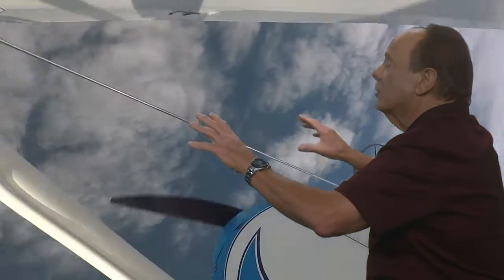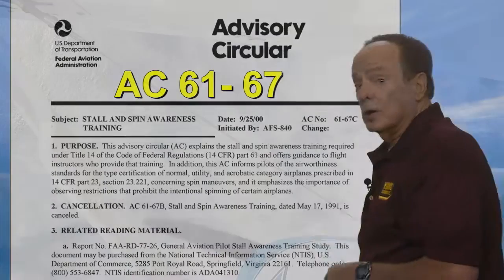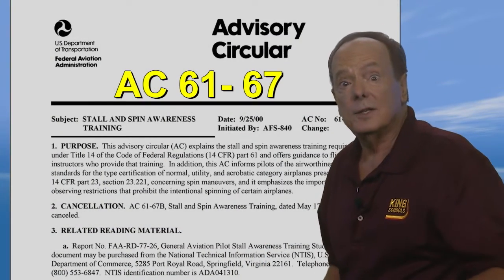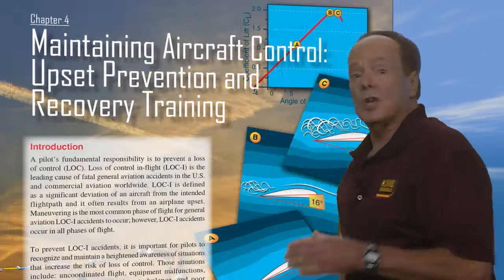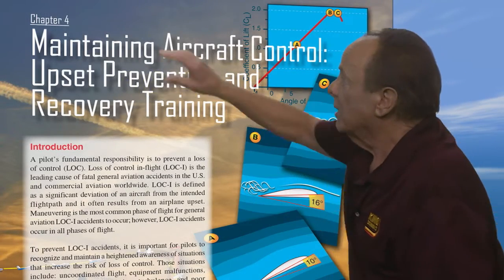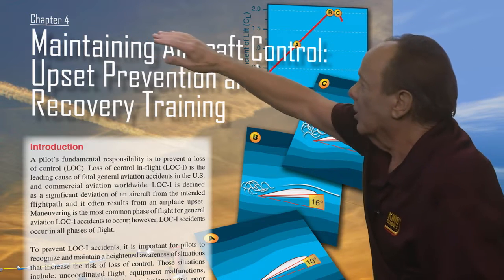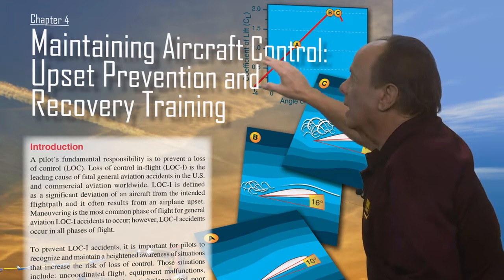As a flight instructor, one of your primary responsibilities is how to train pilots to prevent loss of control and how to recover control if they inadvertently lose it. Your preparation to become a CFI involves demonstrating several types of stalls and spin training. You'll also want to be aware of the FAA's guidance in this advisory circular on stall and spin awareness training, and also in Chapter 4 of the Airplane Flying Handbook, called Maintaining Aircraft Control, Upset and Recovery Training.